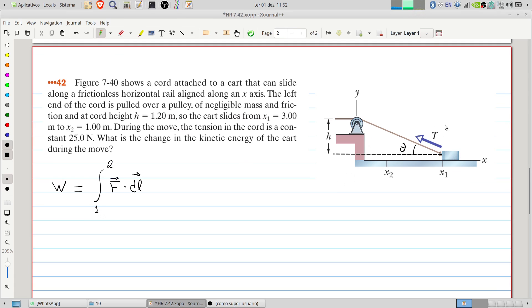We know the tension is constant, but the internal product of the tension and the displacement will be the magnitude of the tension, 25 newtons, projected in the x direction. The cosine of theta will appear as we project the tension.